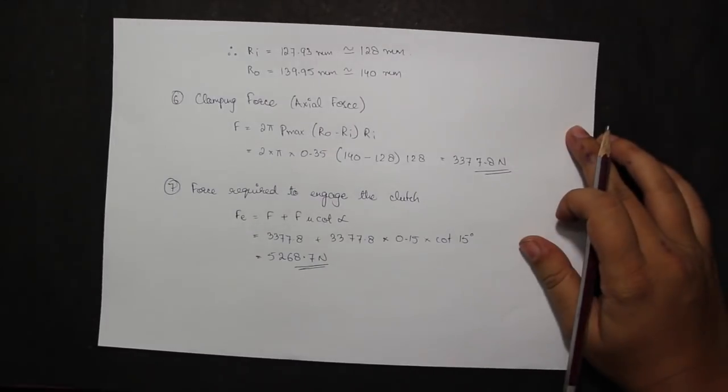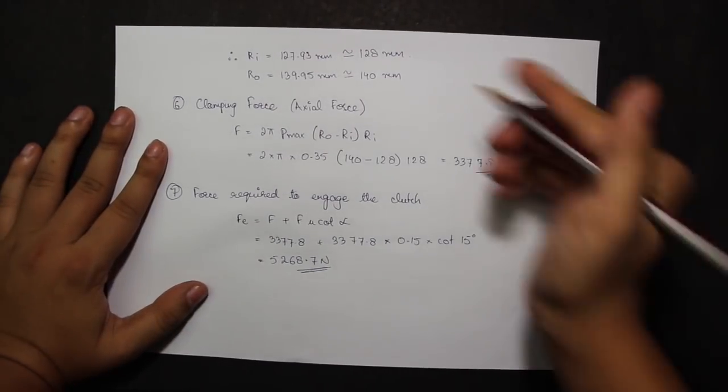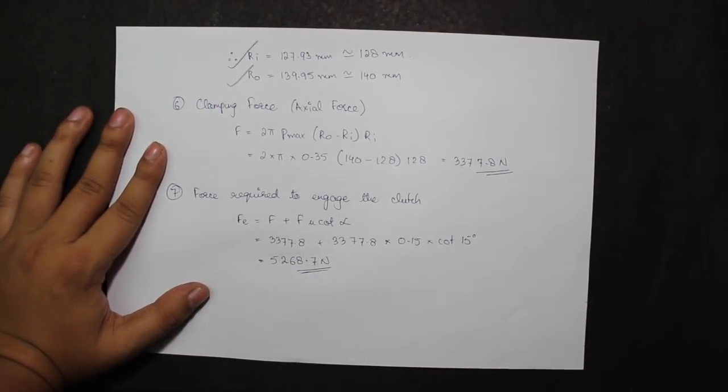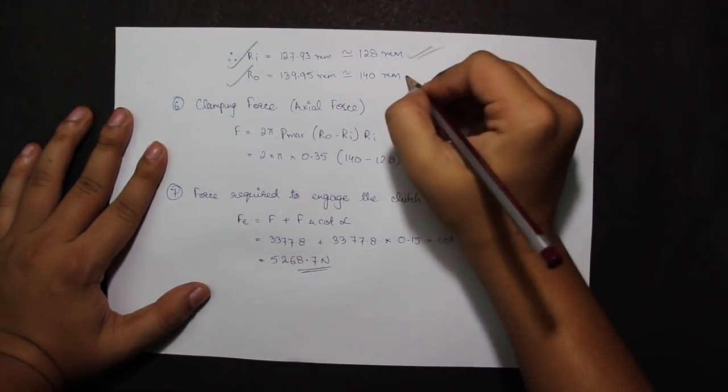So I have two equations and two variables. I can solve them to calculate both the value for ri and r0, which come out to be 128 and 140 mm respectively.